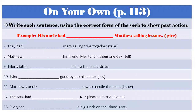Now we are on page 113 — 'On Your Own' — where you have to write each sentence using the correct form of the verb to show past action. This is tricky because there are two ways: past tense and past with helping verb, so keep an eye on that. Have your table or chart next to you. Pause the video and try to answer numbers 7 through 13 — just the answers, you don't have to write the full sentences. I'll be right back.